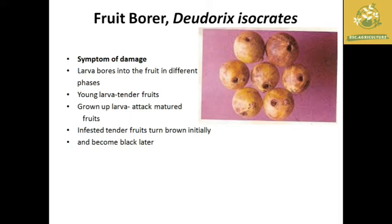The next pest is the fruit borer, with scientific name Eudocima isocrates. The larvae bore into the fruit at different phases. Young larvae attack tender fruits, while grown-up larvae attack mature fruits. Infested tender fruits turn brown initially on the first stage of attack.